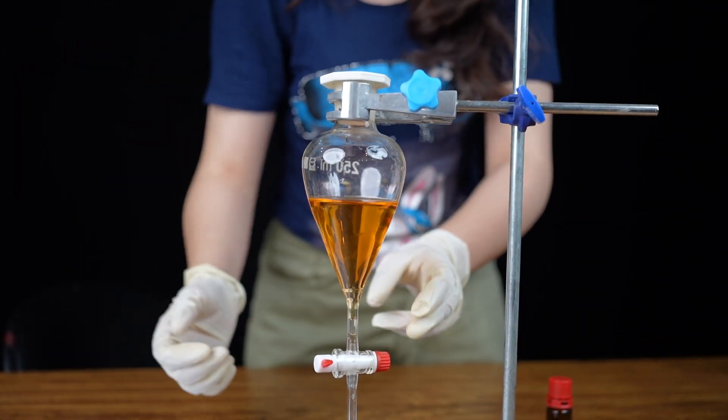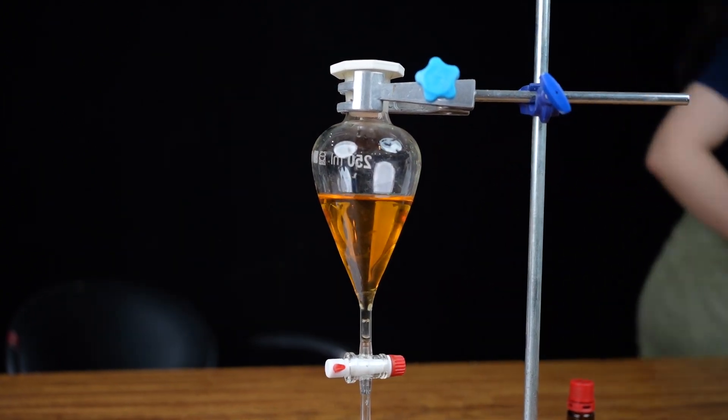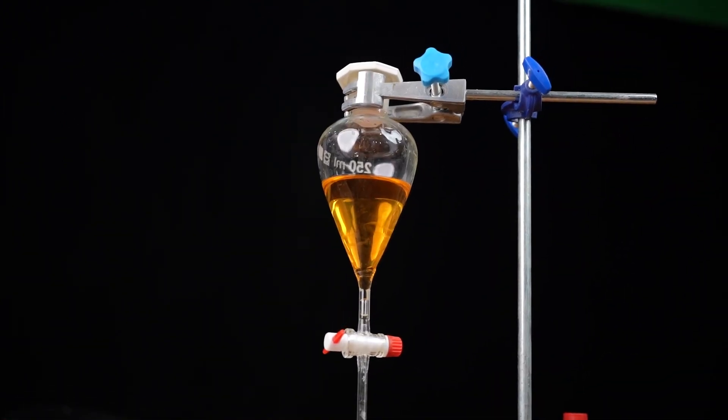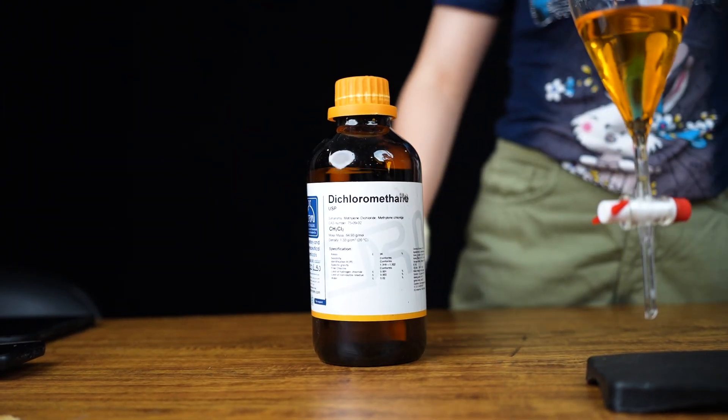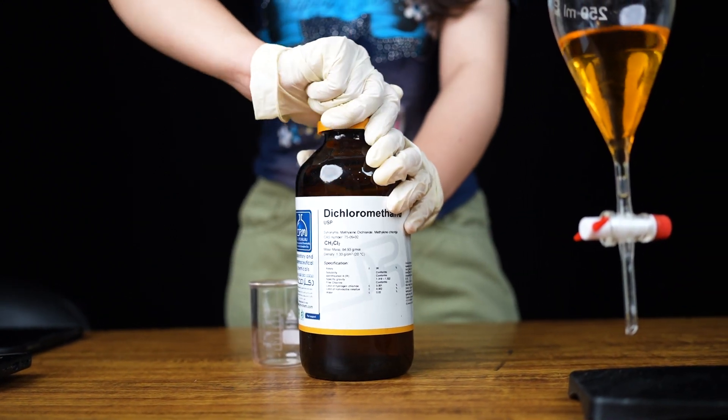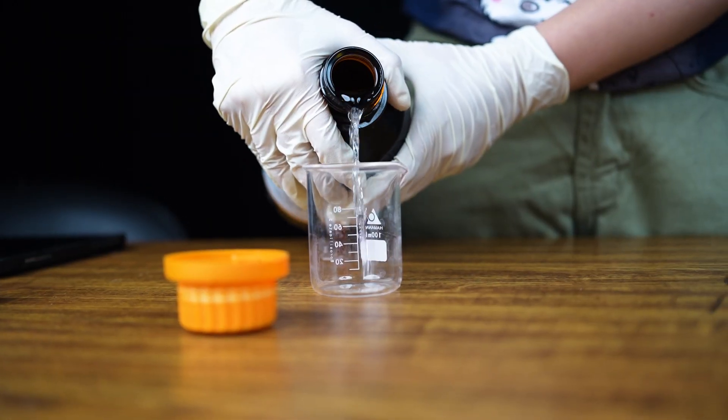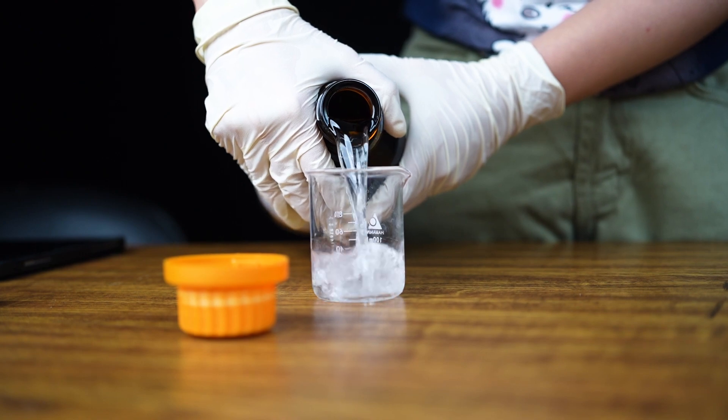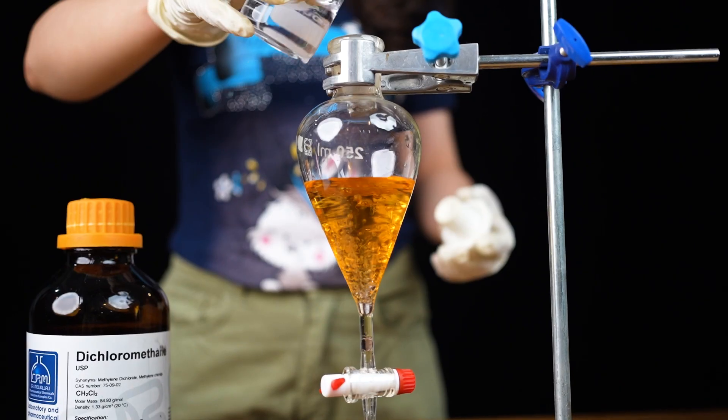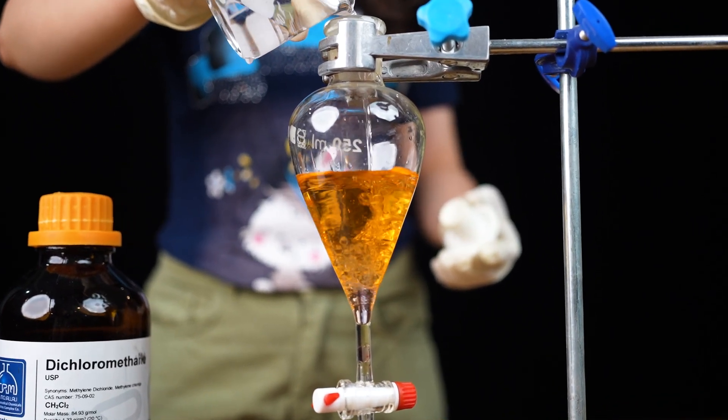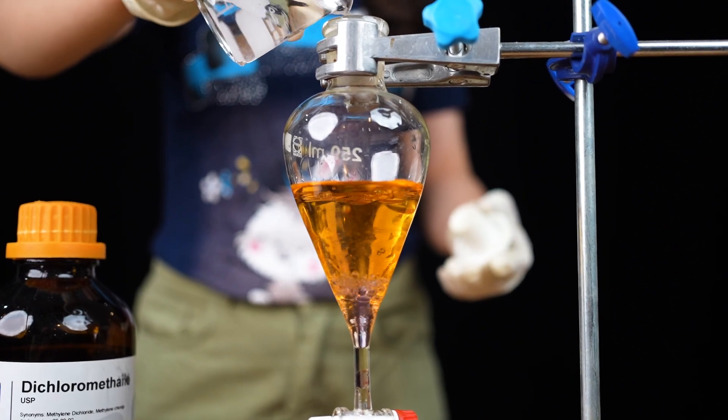As I said previously, iodine is a non-polar molecule, so it needs a non-polar solvent too. In this case, I used dichloromethane to extract it from water. And as I always say, try to add your solvent to your solution very slowly so there won't be any water droplets spreading outside.